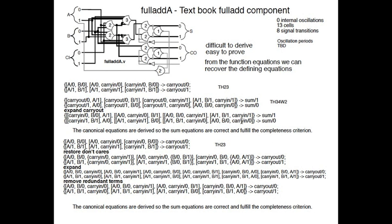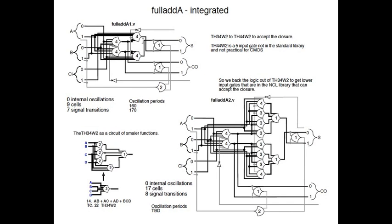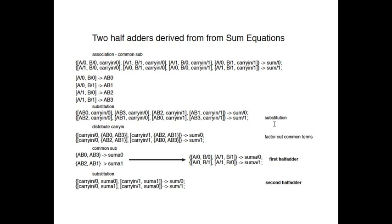This is the textbook adder — it's difficult to derive, but it's easy to prove. We just take the equations from the gates, combine them, and we get the original defining equations. The integration results in a four-input gate; if we add the closure, it becomes a five-input gate, which is not good for CMOS. If we want fewer-input gates, we can back the equation out of the four-input gate, but then we have more gates and more transitions. So integration doesn't always work.